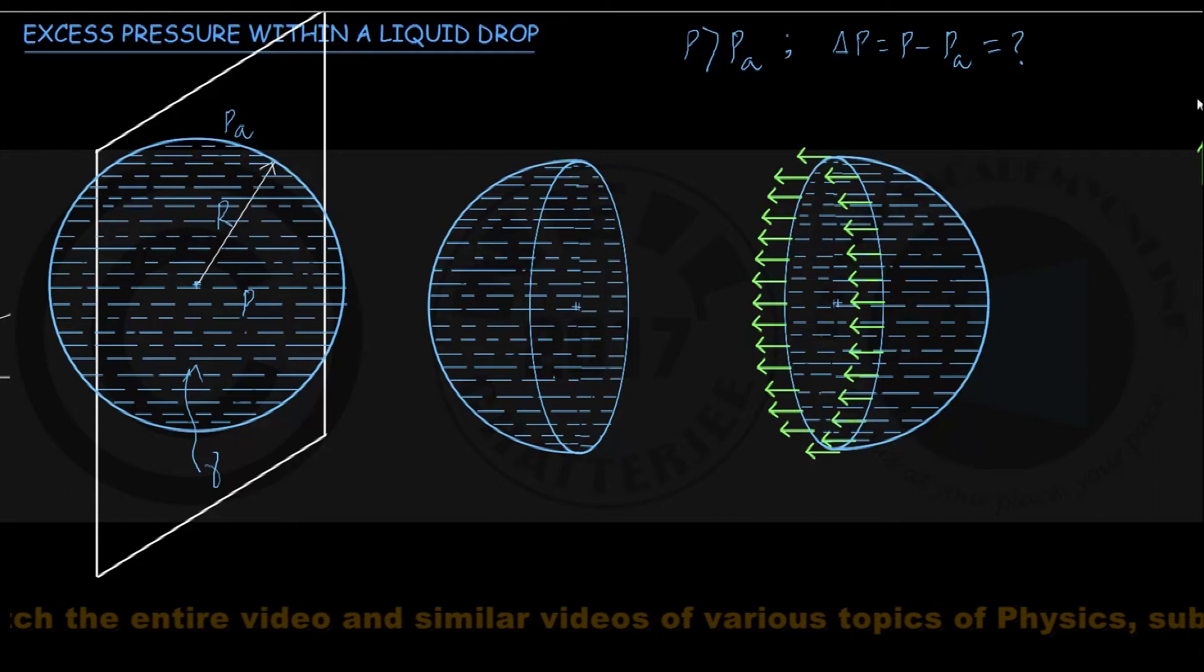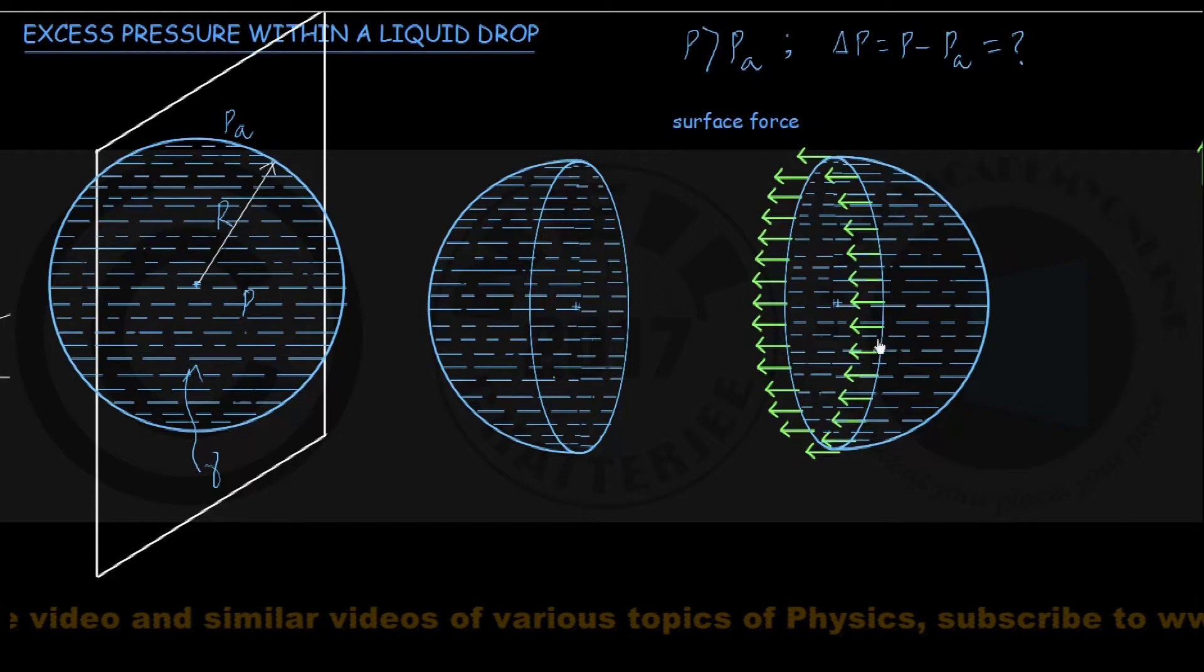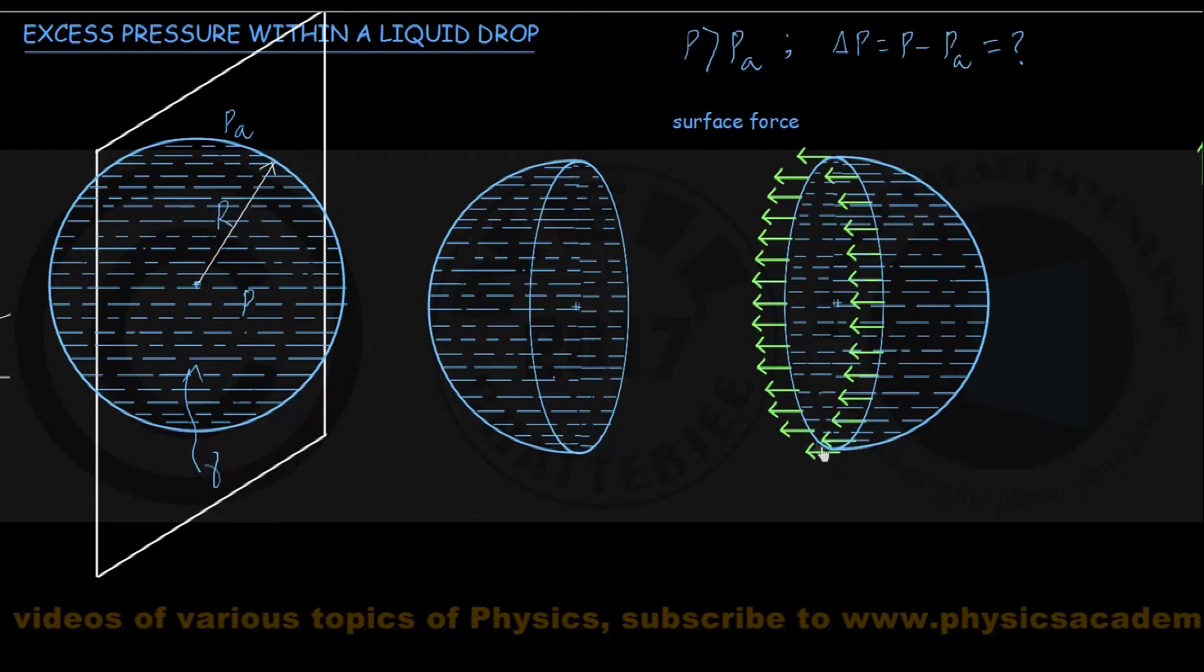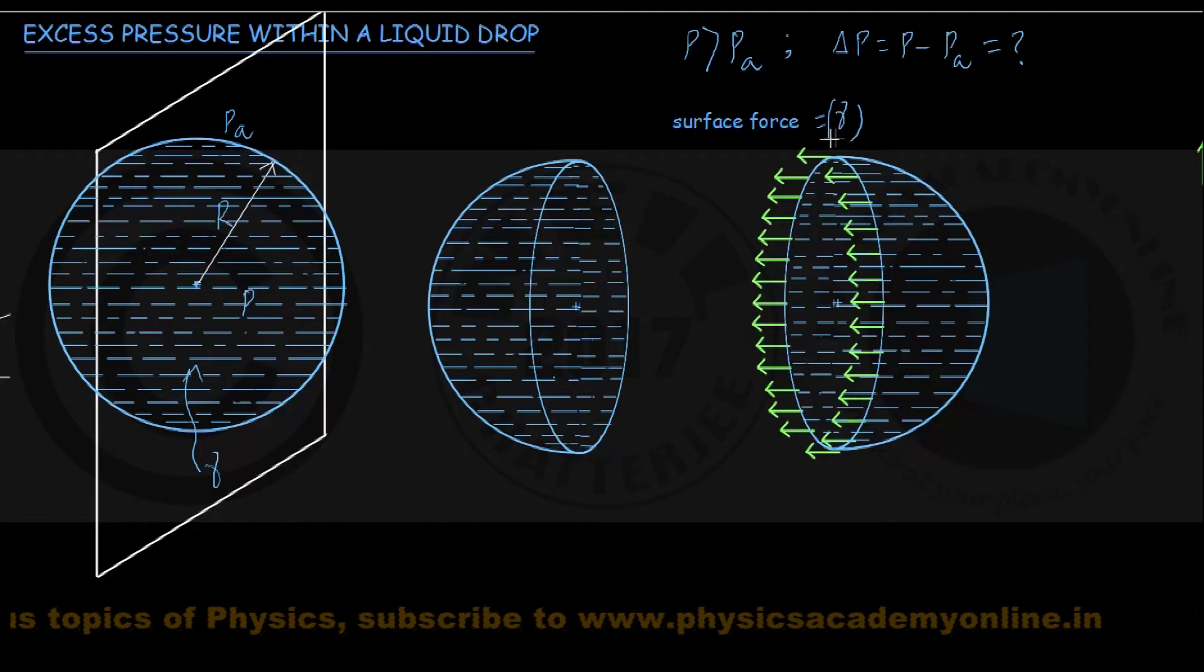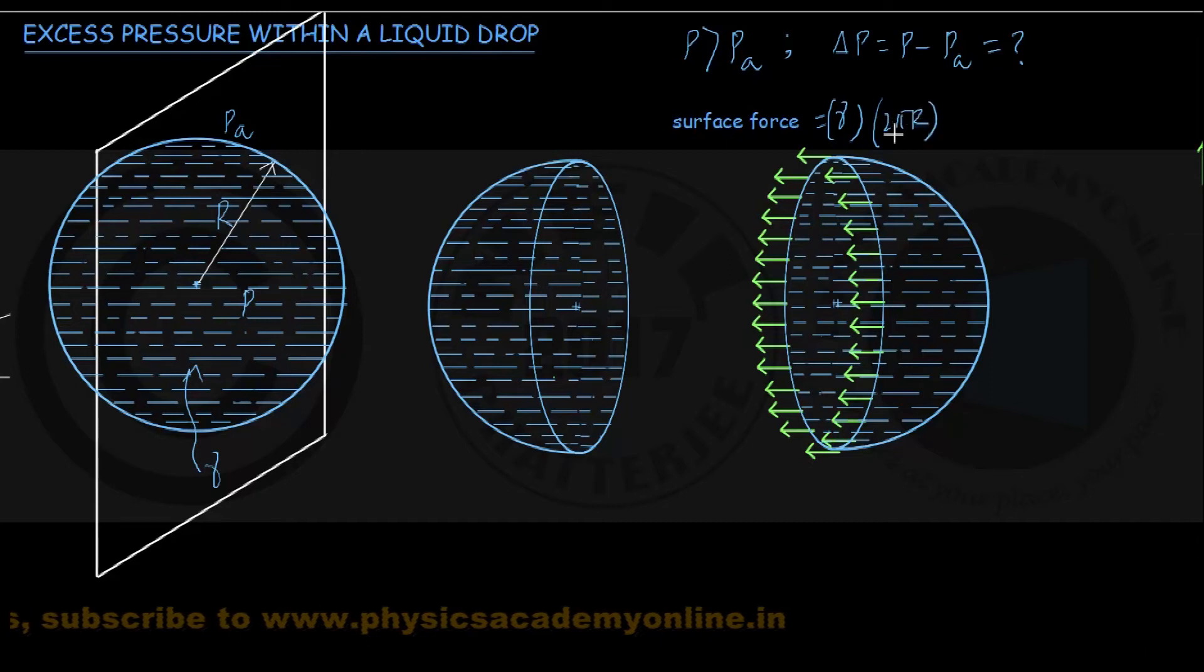Therefore, the surface force exerted on the right hemisphere by the left hemisphere across the perimeter of the circular face is gamma, the surface tension, multiplied by the perimeter of the circular face, that is 2πR.